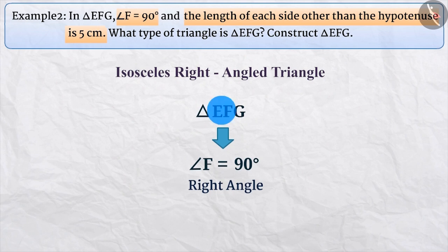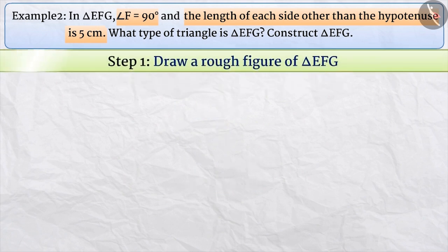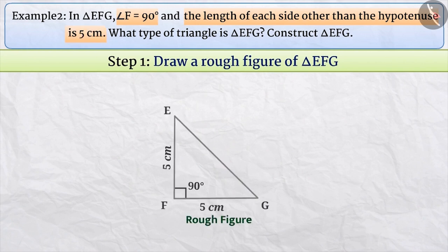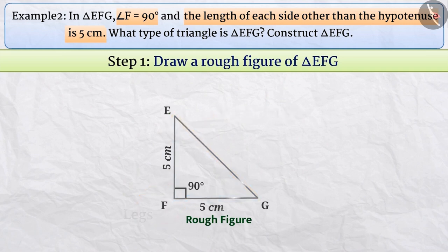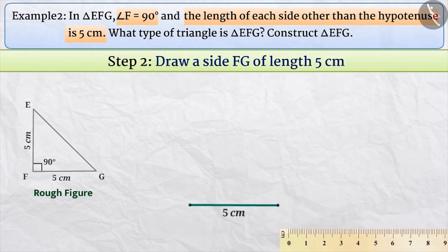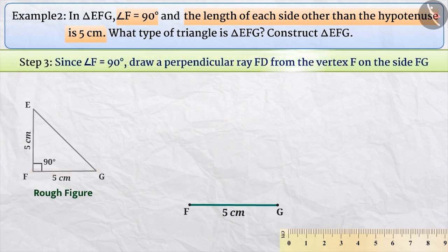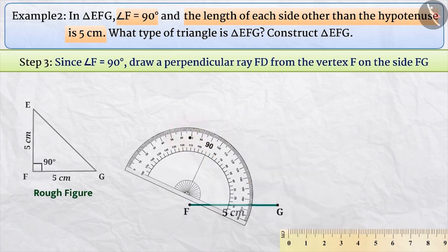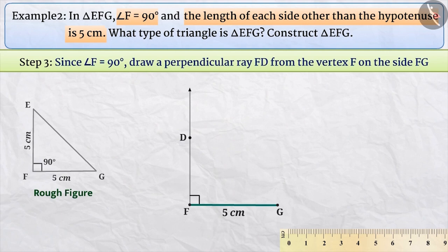Now let's construct triangle EFG. Step 1: With the help of the given measurements, we will draw a rough figure of triangle EFG. From this, we come to know that sides EF and FG are the legs and side EG is the hypotenuse. Step 2: Using a ruler, we will draw a line segment FG of length 5 cm. Step 3: With the help of a protractor, we will mark an angle of 90 degrees at vertex F, giving us a perpendicular ray FD on side FG. Vertex E should be situated somewhere on ray FD.